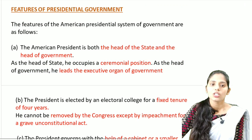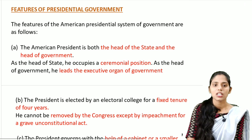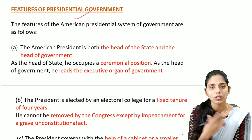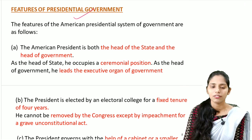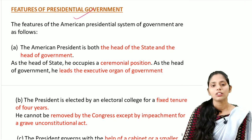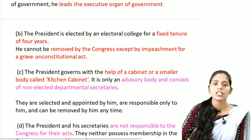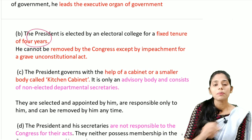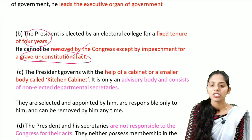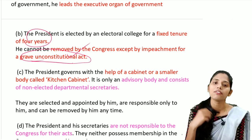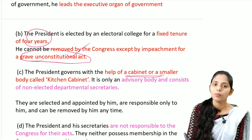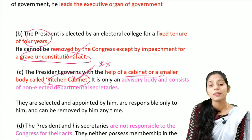Now let us see the important features of the presidential form of government. In America, the presidential form is present. The president is the head of both the state and the government — when head of state he occupies a ceremonial position, and when head of government he leads the executive organ. The president is elected by an electoral college for a fixed tenure of four years. He cannot be removed by Congress except by impeachment for a grave unconstitutional act. The president governs with the help of a small body called the kitchen cabinet.